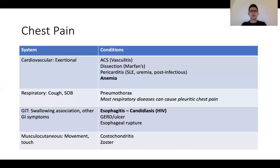The last group for chest pain would be muscular and cutaneous disorders — conditions like costochondritis, herpes zoster — and associations with movement and touch would be important to elicit.